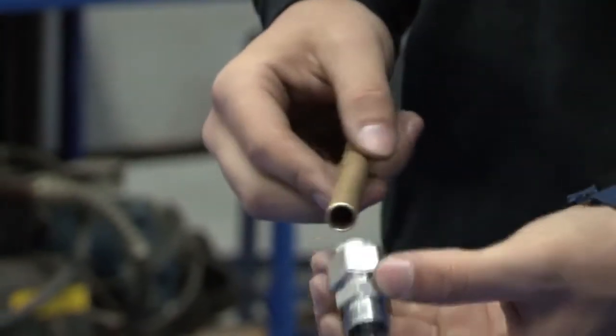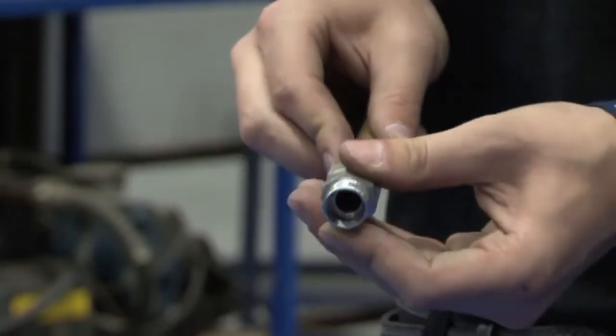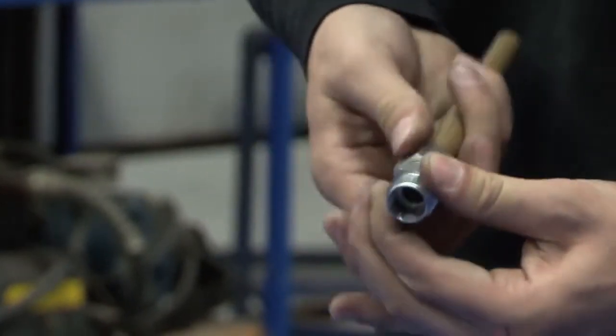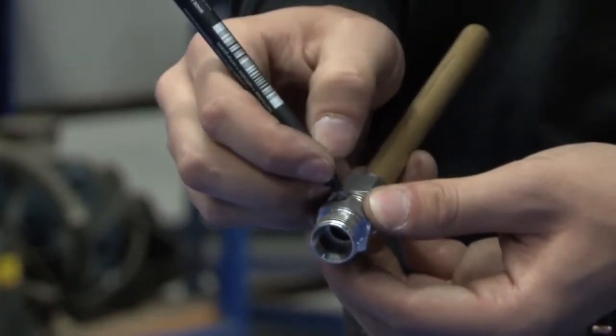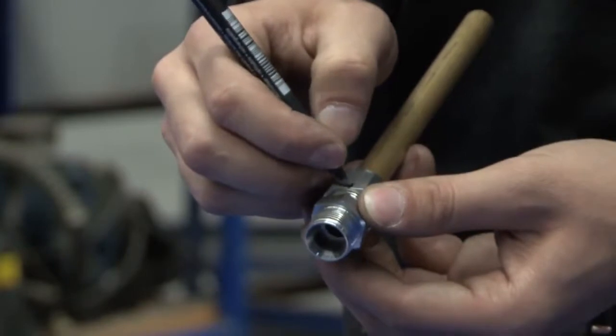Typically assembly instructions require that you seat the tube fully into the fitting and then hand tighten. Mark this position on the fitting body and nut.